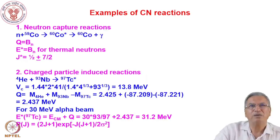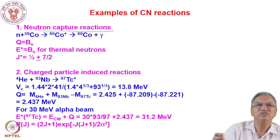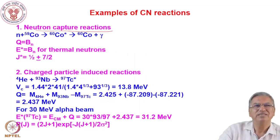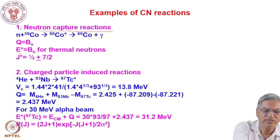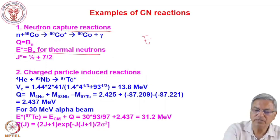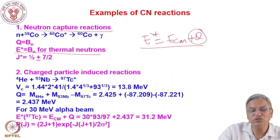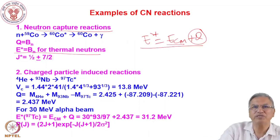Examples of compound nuclear reactions include neutron capture reactions. When the neutron is captured by the nucleus, it is amalgamated with the nucleus and the compound nucleus is excited to an excited state. That excitation energy will be equivalent to the binding energy for thermal neutrons. The excited energy is E_CM plus Q. The Q value for the neutron capture reaction is the binding energy of the neutron in the compound nucleus, and for thermal neutrons the energy is close to 0.